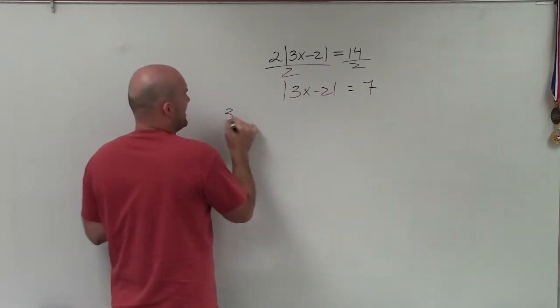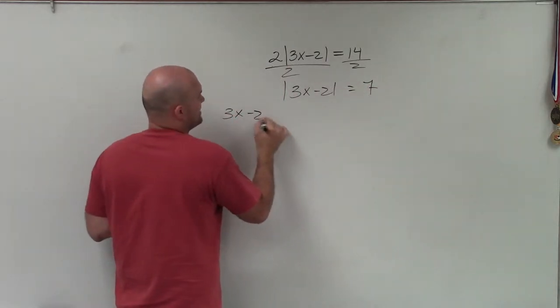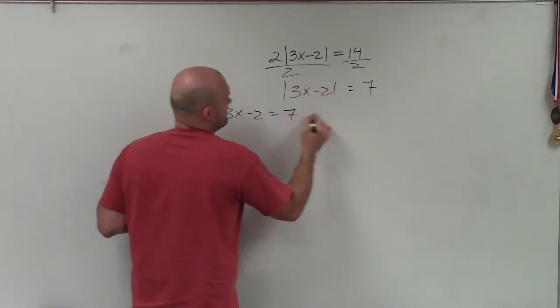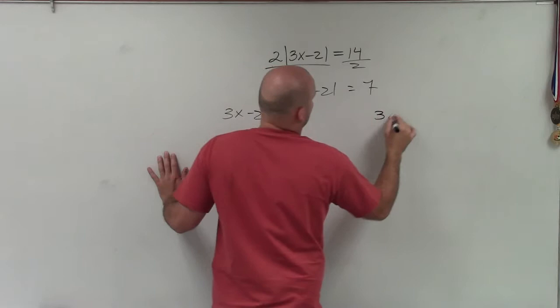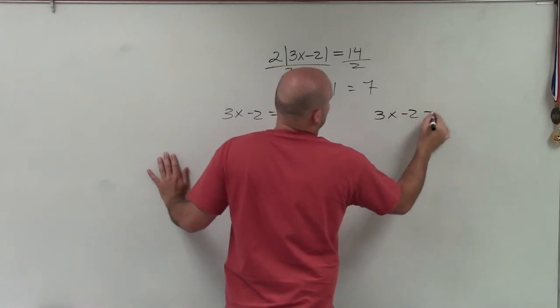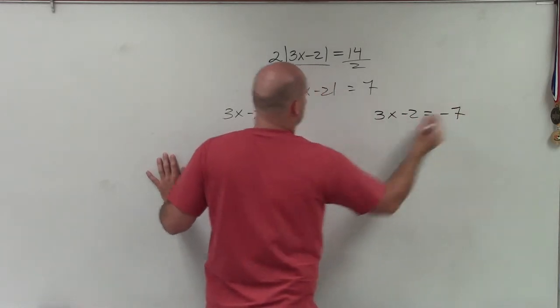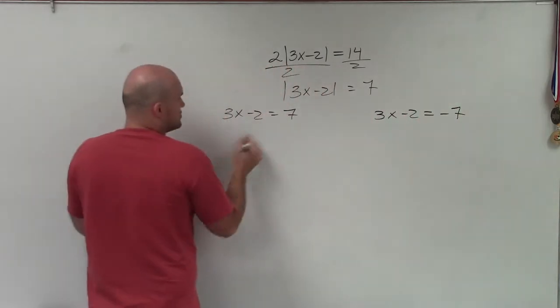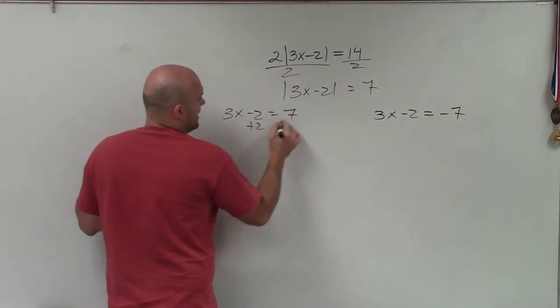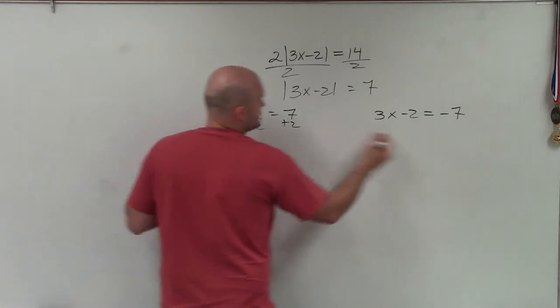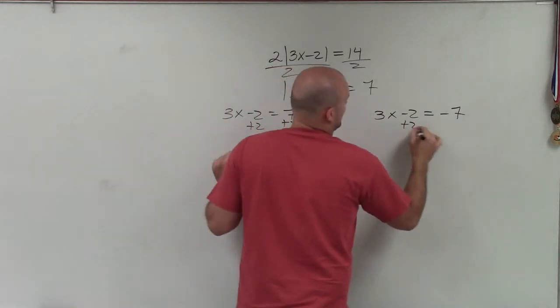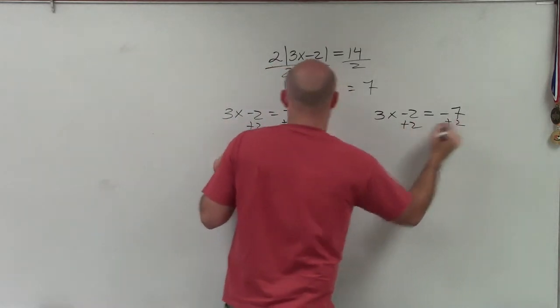Now I can set up the two cases: 3x minus 2 equals 7, and 3x minus 2 equals negative 7. To solve for x, I'll add 2 to both sides of each equation.